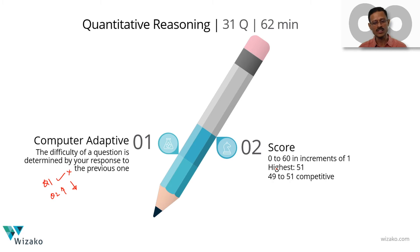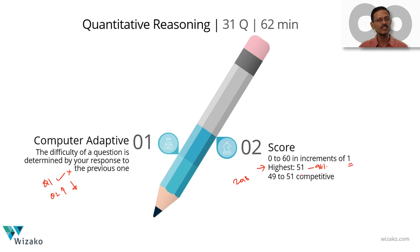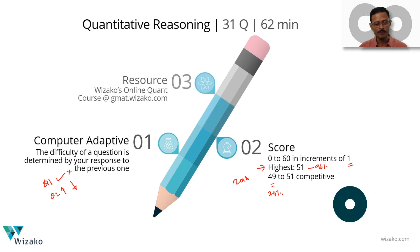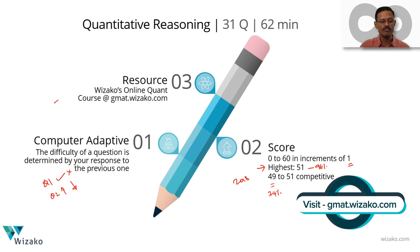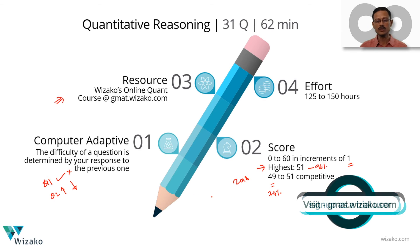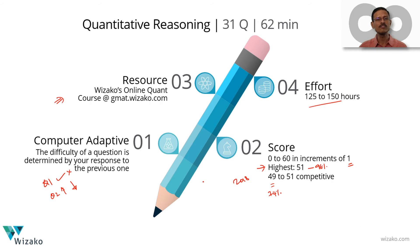The quant section is scored on a scale of 0 to 60, moving in increments of 1, though the highest possible score is 51. A competitive score is 49 to 51. In 2018, a 51 corresponds to the 96th percentile — only 4 percent of GMAT test takers achieve this. A 49 corresponds to the 74th percentile, placing you in the top quartile. Visaco's online course at gmat.visaco.com is a comprehensive and affordable program for this section, with a couple of free topics available to try first. An investment of 125 to 150 hours is required to reach a score of 49 to 51.